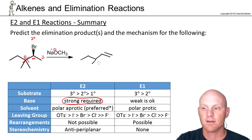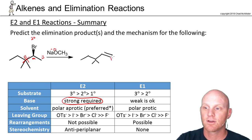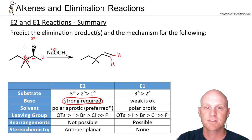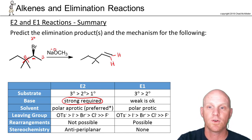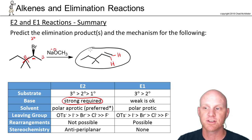With only one beta carbon where the alkene can form and it having three hydrogens, we get one single regioisomer. Cis and trans don't exist because one side of this alkene is bonded to two identical groups. So in this case, you get one regioisomer — a single product, no major/minor, just one product.